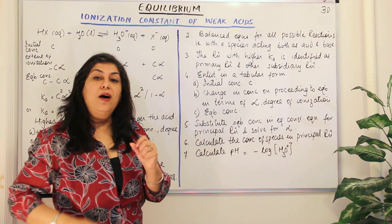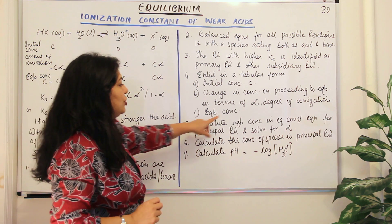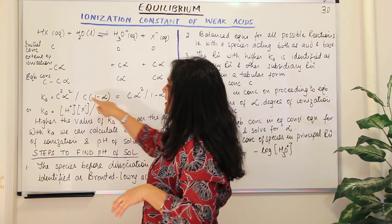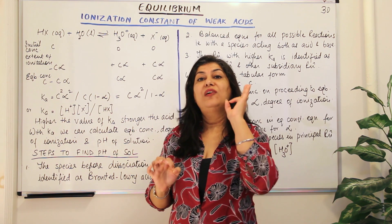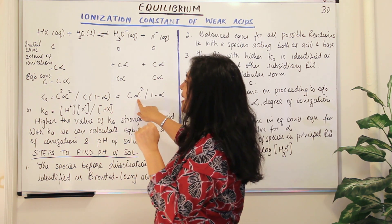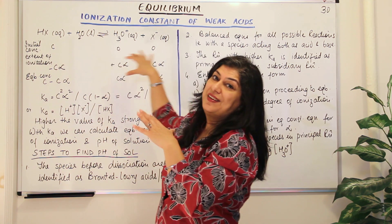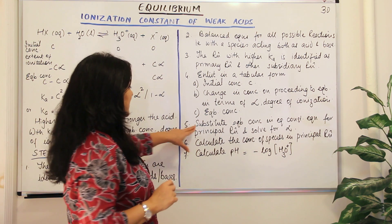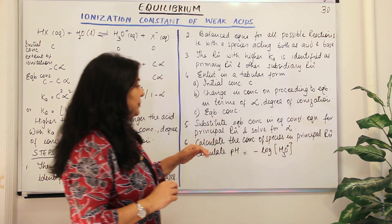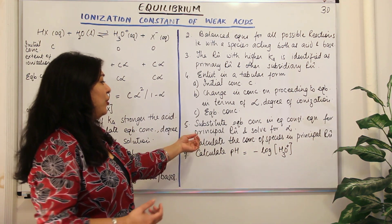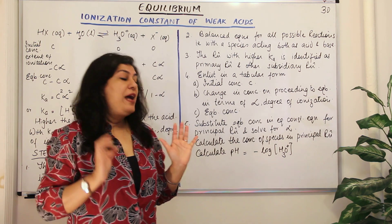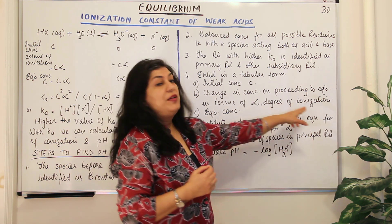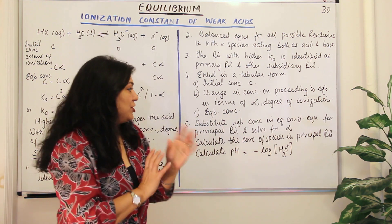Now substitute these equilibrium concentrations into the Ka equation for the principal reaction and solve for alpha — the degree of ionization. You find out the value of alpha.